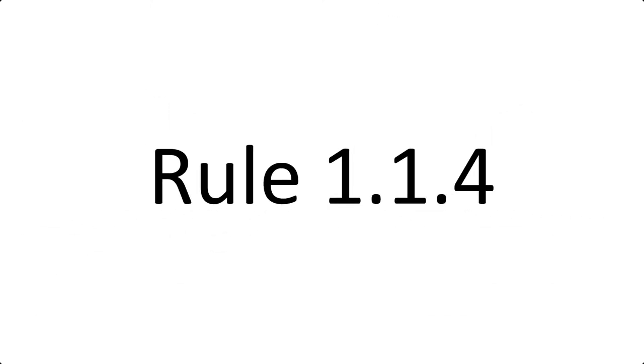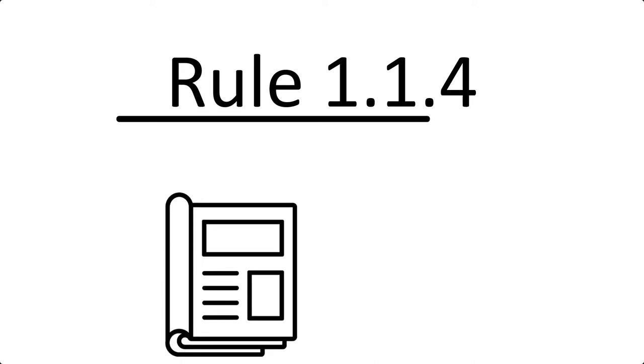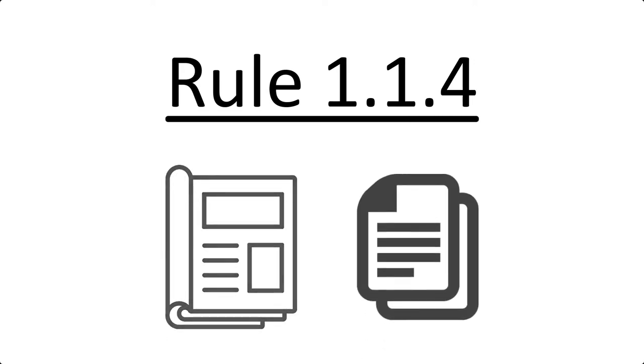You can see a full list of examples of short titles, including references to secondary sources like books and journal articles, in rule 1.1.4 of the AGLC.